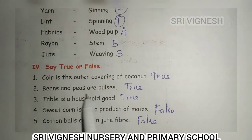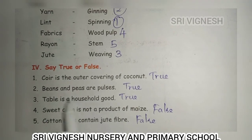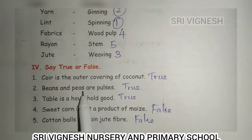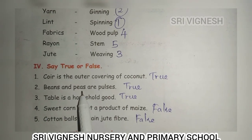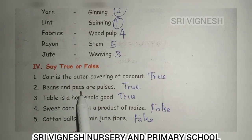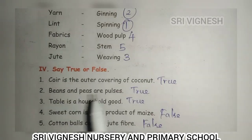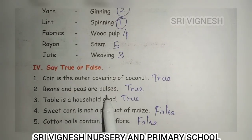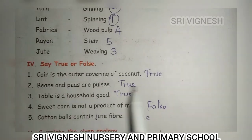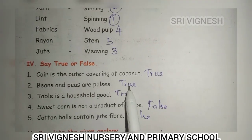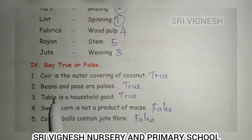Next, beans and peas are pulses. We look at the vegetable market — these two are pulses. So this is correct, true.